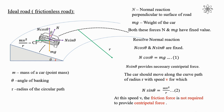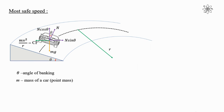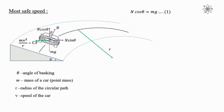Since only the component N sin theta is enough to provide centripetal force, the road acts as an ideal (frictionless) road. This speed v is known as the most safe speed of the car on a banked road. For the most safe speed, N cos theta balances mg and N sin theta balances the centrifugal force mv²/r.